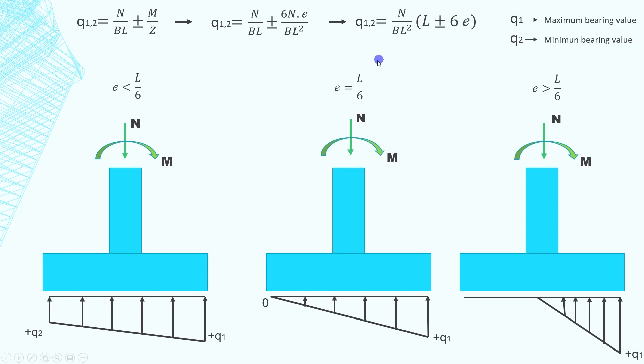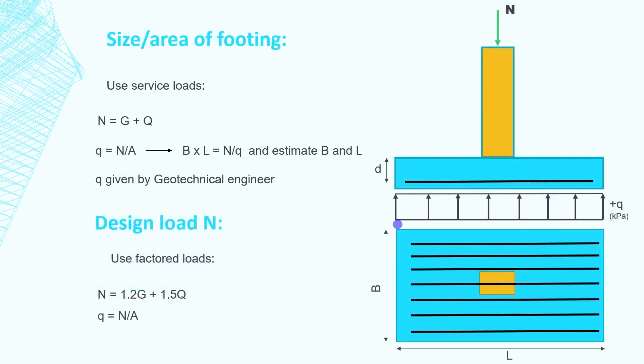From this equation you get that if the eccentricity e is less than L divided by 6, both Q1 and Q2 are positive, which means the footing is in direct contact with the soil over its full length. If e equals L divided by 6, the pressure distribution varies from 0 to a maximum Q1. When e is greater than L divided by 6, the pressure Q2 theoretically is negative. However you cannot have tension under the footing, you cannot have a negative contact bearing pressure between the footing and the soil. This is the type of situation you need to avoid. So now you understand the middle third rule that you see in all engineering books.